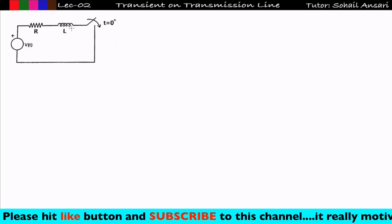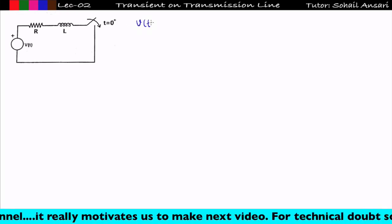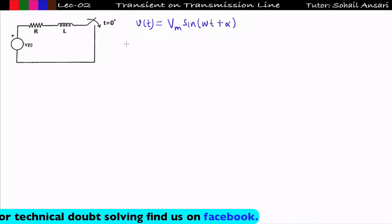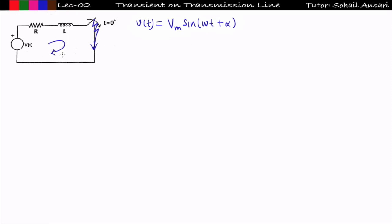In a transmission line, we generally neglect the shunt branch and only take the series impedance. So any transmission line can be represented as a resistance in series with an inductance. The supply voltage is the voltage at the terminal of the synchronous machine, so V_t = V_m sin(ωt + α). When I suddenly short circuit this — meaning a fault occurs — I apply KVL in this loop: V_t = i(t)·R + L·(di/dt).